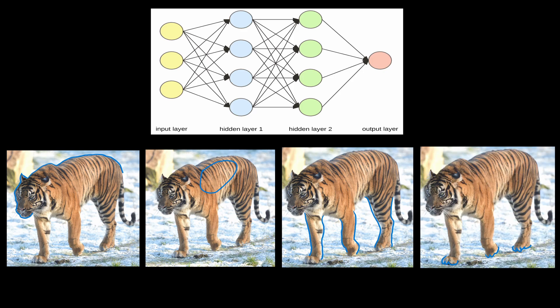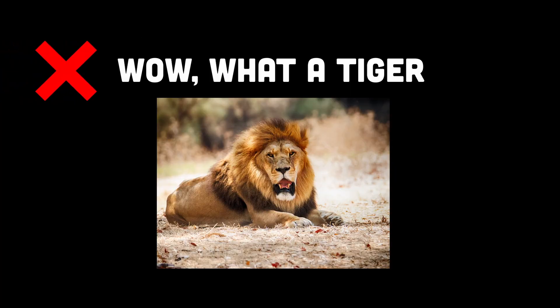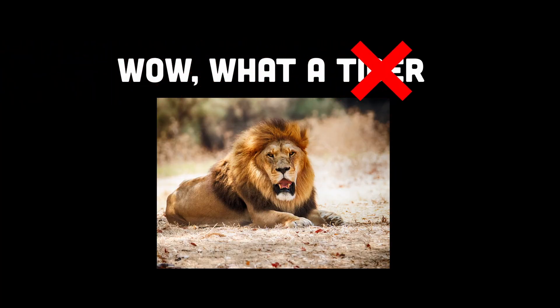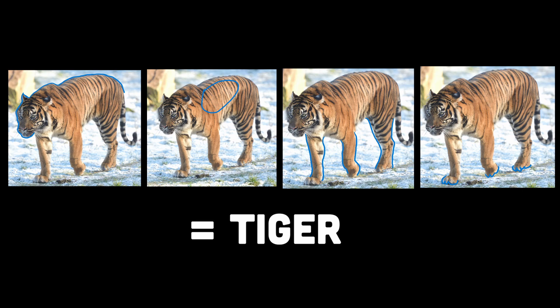Note that each layer typically consists of multiple neurons. The outputs of neurons in one layer are usually connected to the inputs of neurons in the next layer, forming a directed graph-like structure. Individually these layers are quite useless — just because something has claws doesn't really make it a tiger — but when we combine all these layers together, we actually have enough information to make a prediction.